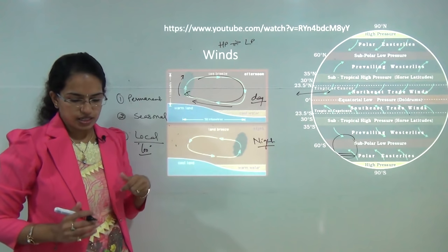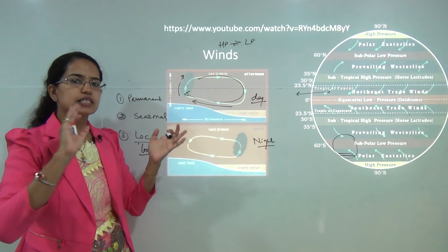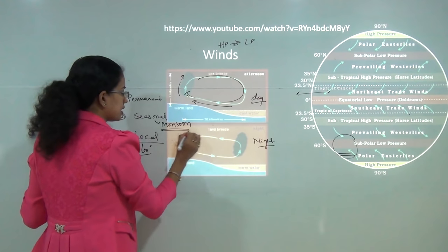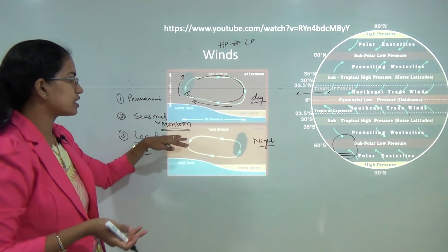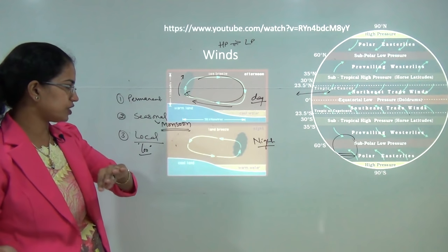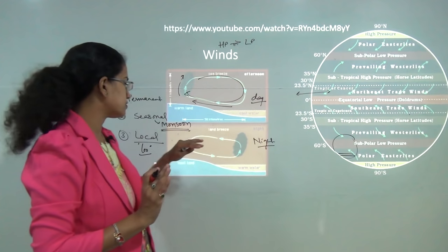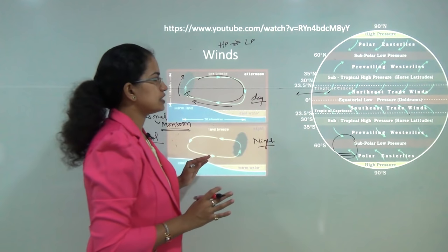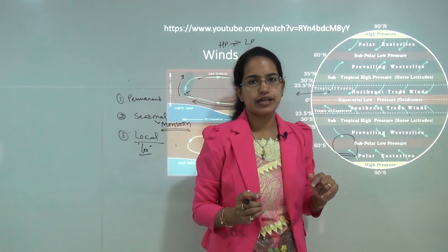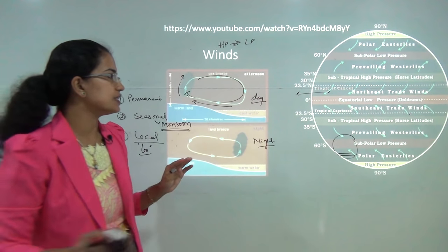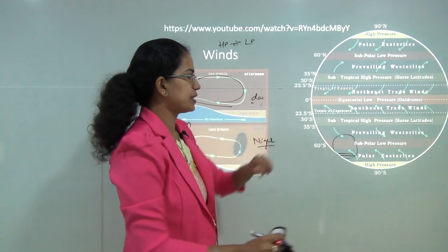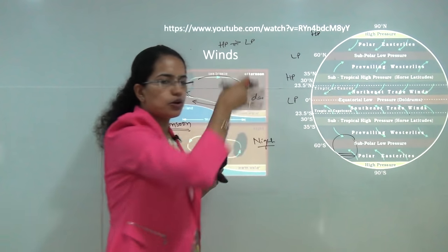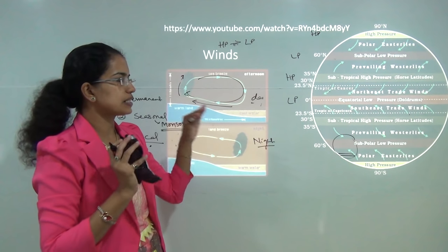Seasonal winds are due to changes in the direction of wind, clearly explained by the monsoon phenomena in India — a reversal of wind takes place. Now the most important are the permanent winds — those winds that flow in a particular direction throughout the year. Looking at the globe, it is automatically divided into belts of low pressure and high pressure alternately, with wind moving from high pressure to low pressure.